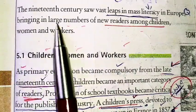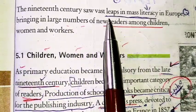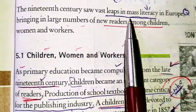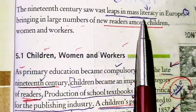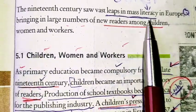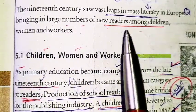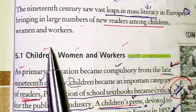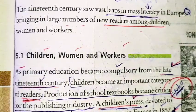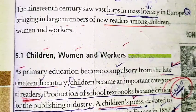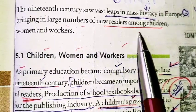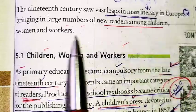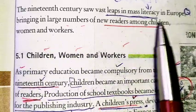The 19th century saw mass literacy in Europe, bringing literacy on a large scale. Literacy was rapidly growing, and at its maximum in Europe it was 90% and above. The new literate readers were children, women, and workers — these are the three key categories.